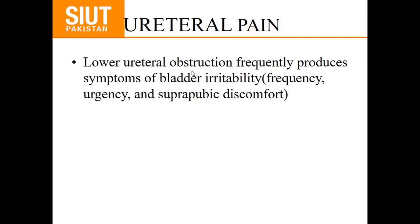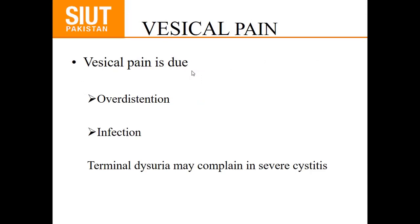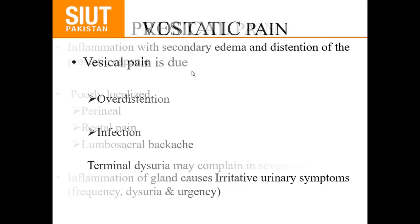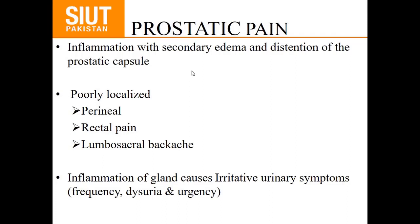Vesicular pain is mostly due to overdistension or infection of the bladder. The chief complaint may be terminal dysuria, which may be a sign of severe cystitis. Prostatic pain: inflammation is due to secondary edema and distension of the prostatic capsule. Prostatic pain is poorly localized, either in the perineum, as rectal pain, or as lumbosacral backache. Inflammation of the prostate will produce irritative urinary symptoms including frequency, dysuria, and urgency.